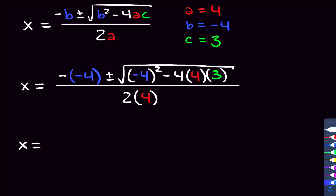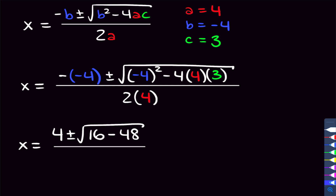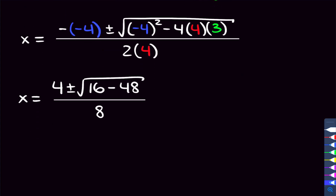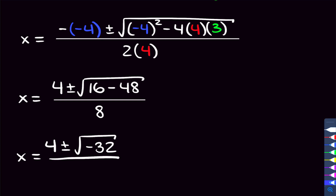Now we can do some simplifying. We've got negative negative 4 out front — two negatives make a positive, so that's positive 4. Plus or minus the square root of negative 4 squared, which is positive 16. Then we have minus 4 times 4 is 16, times 3 is 48 — so minus 48. And that's all over 2 times 4, which is 8. Now we subtract under the square root: 16 minus 48 is negative 32. So we have 4 plus or minus the square root of negative 32, over 8.